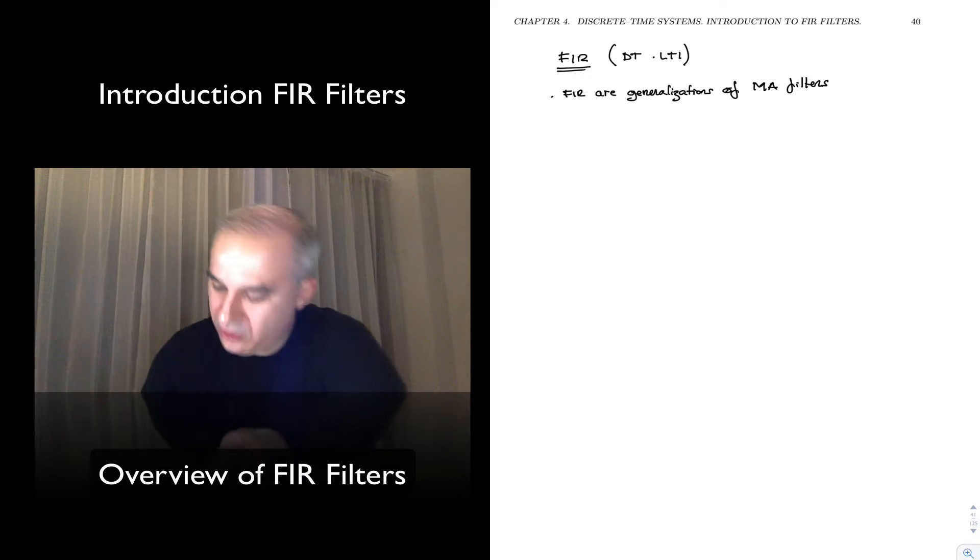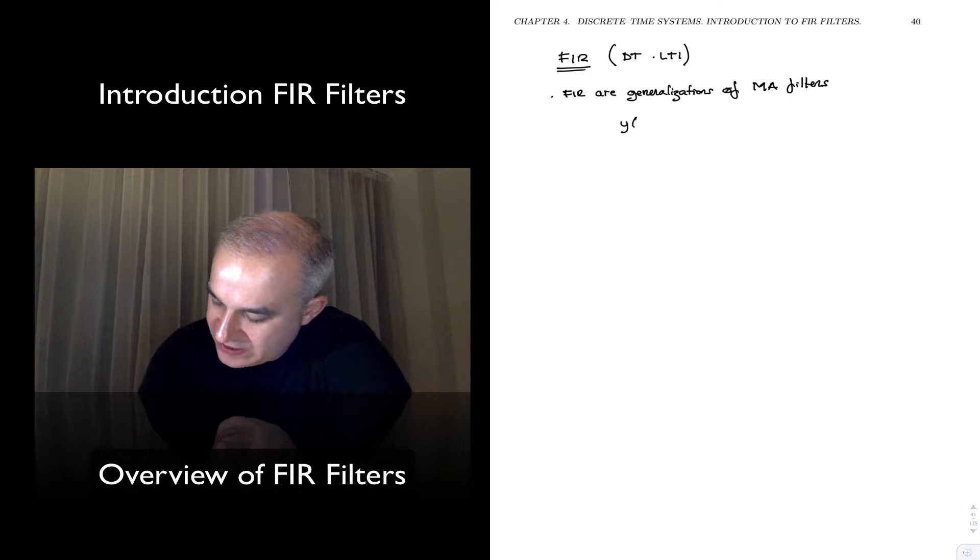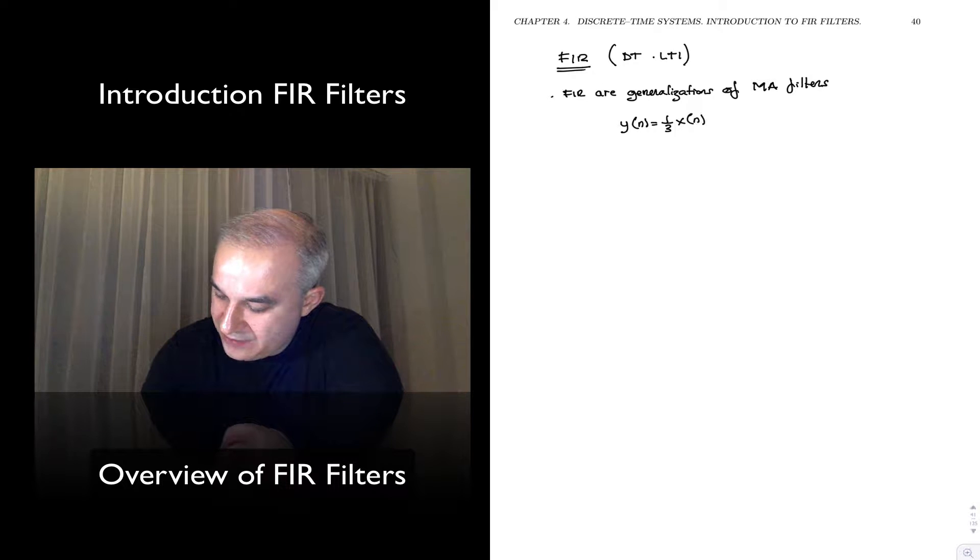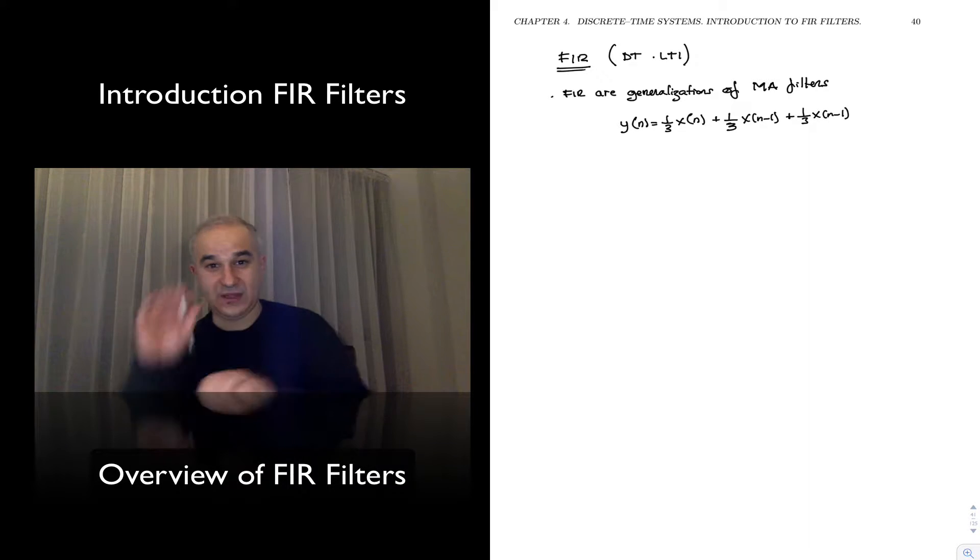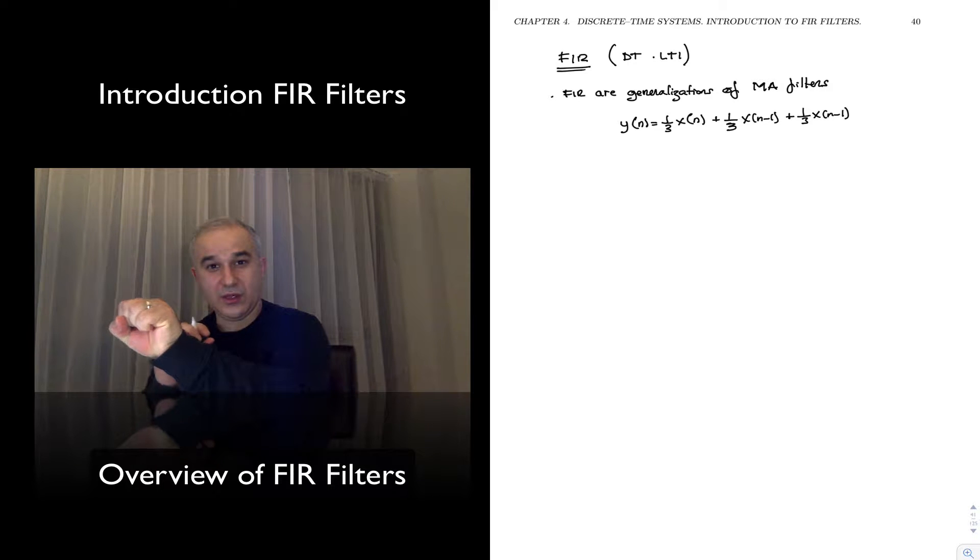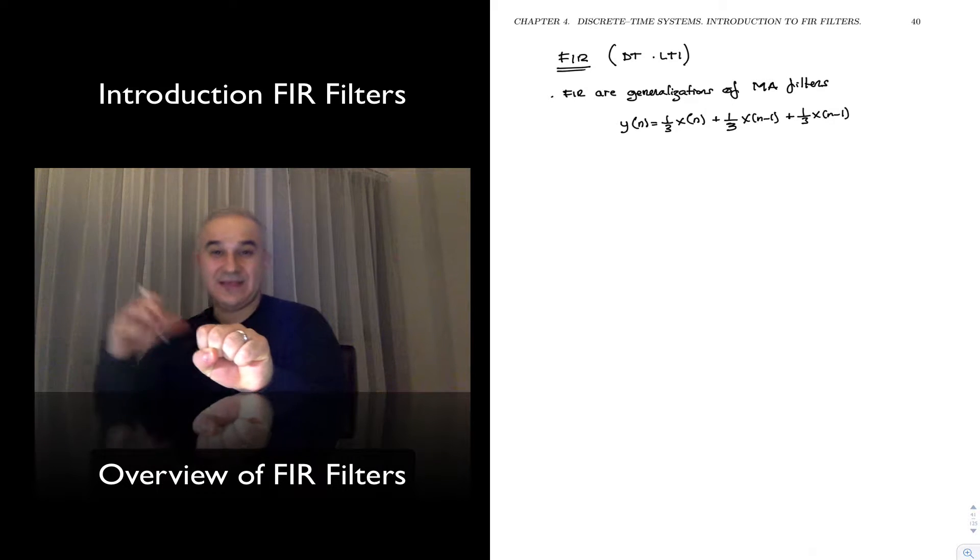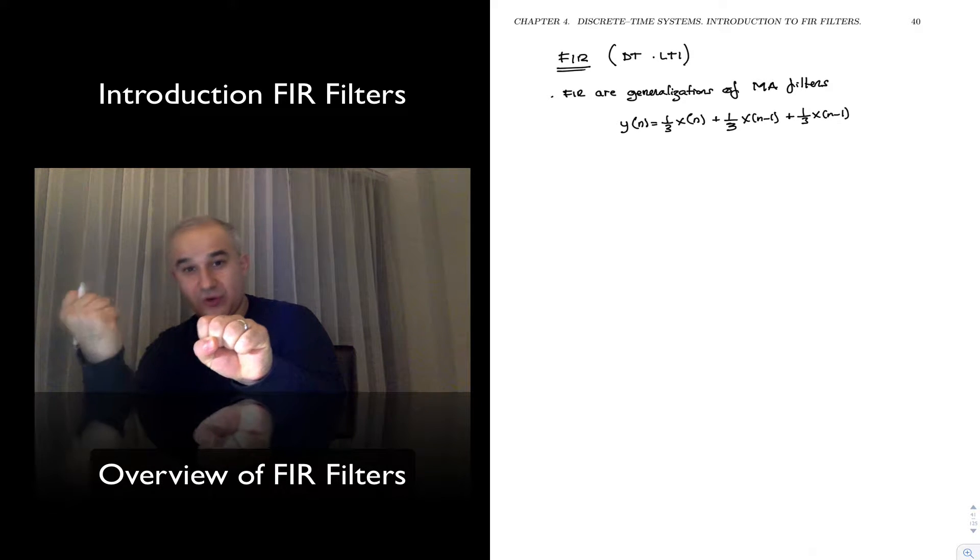If you recall, we had an example x of n, the output was an average of the current input, the previous input, and the previous input. So you pick a current input, you scale times one-third, times the previous input that you have stored in memory, and the previous input.